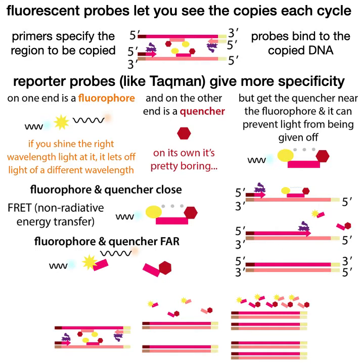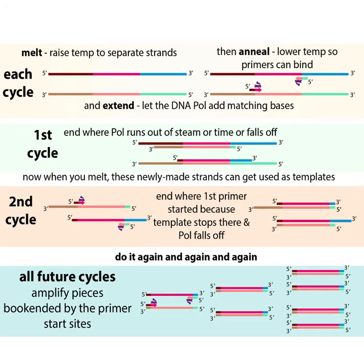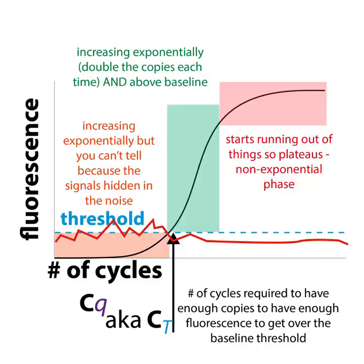You design these probes to bind in between, on the strands of the copied DNA. Each cycle, when the polymerase goes to copy it, it releases fluorescence. The more copies you have, the more fluorescence is seen. PCR occurs in cycles: the probes bind during the anneal step. After you make a copy, you melt the strands apart, the primers bind and the probes bind. Then during extension, the DNA polymerase frees the fluorophore from the quencher. Because you have these cycles and the fluorophores being freed each cycle, we quantify things in terms of cycles.